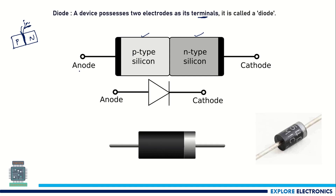One end of the P-type region will be called as anode, and the other end of the N-type silicon will be called as cathode. These two ends will act as two electrodes. Because of two electrodes, this device is called a diode. Di means two, and ODE represents the electrodes.